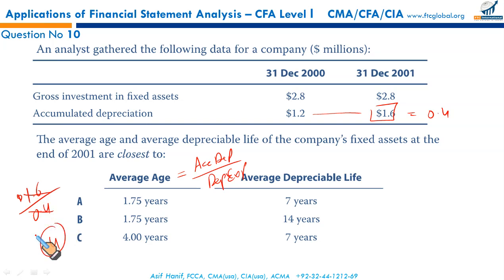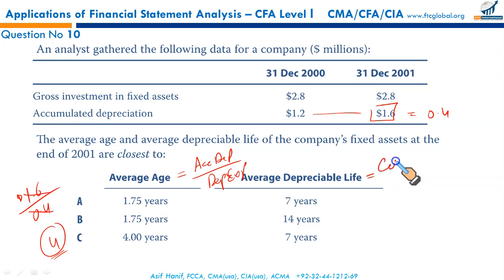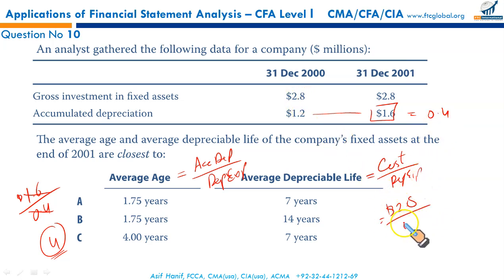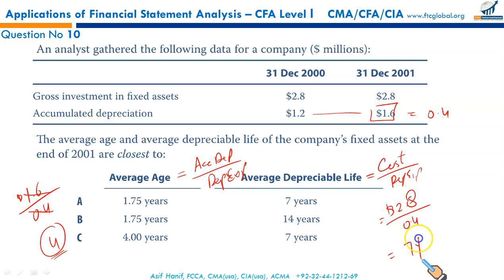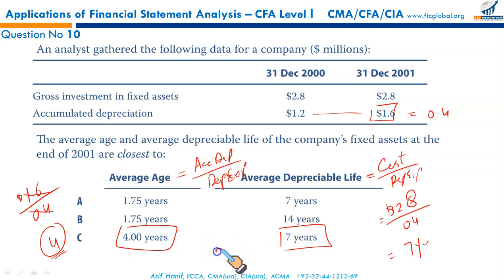To calculate the average depreciable life: Average Depreciable Life = Historical Cost / Annual Depreciation Expense = 2.8 / 0.4 = 7 years total life. Since 4 years of depreciation have already been charged, the remaining useful life is 3 years. The correct answer is C.